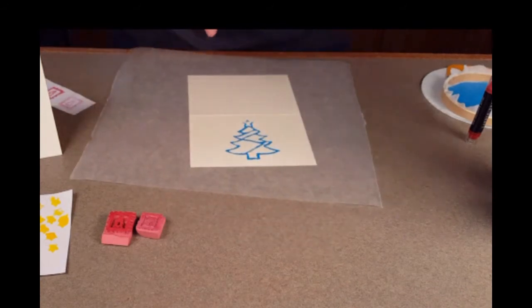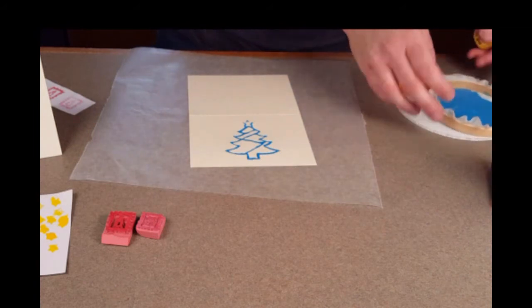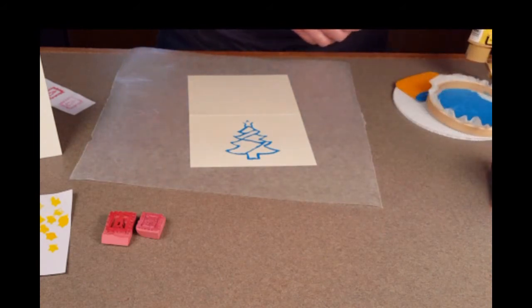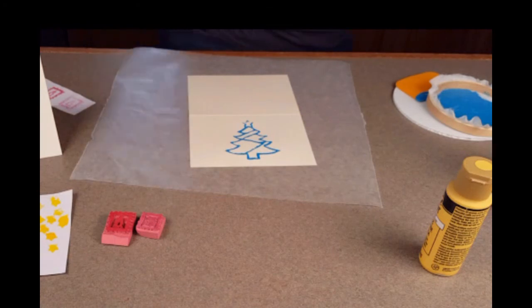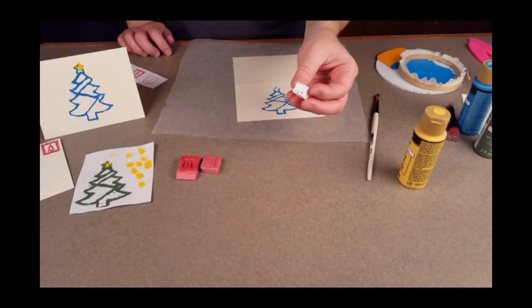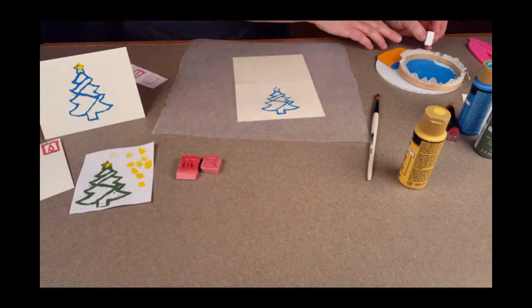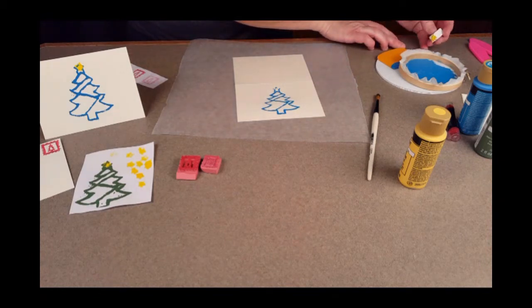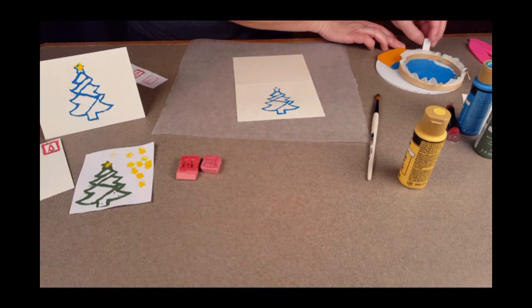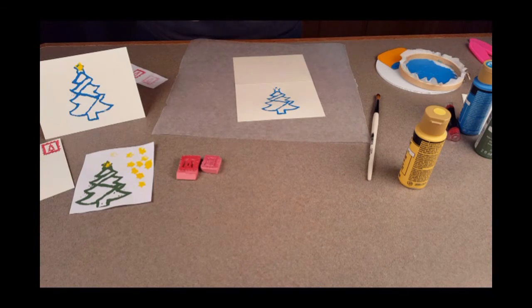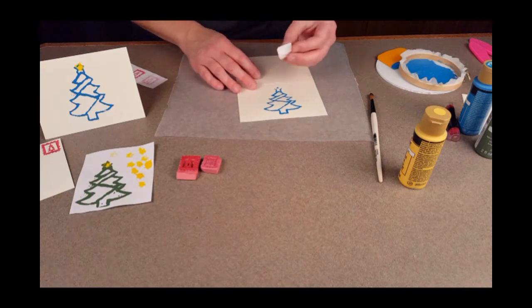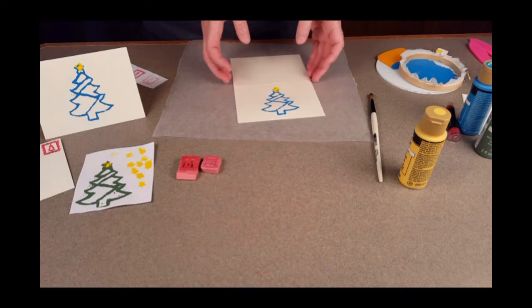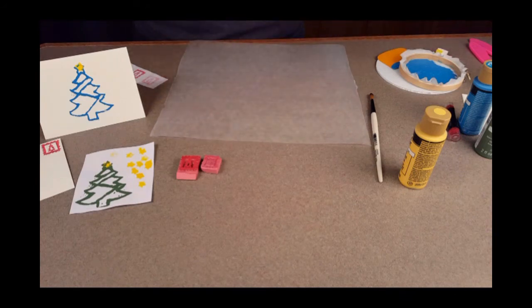Even while this is still wet, I'm going to put a little bit of yellow. I have a little abstract star stamp here and I'm going to get a little bit of yellow paint on that to cover it. I'm just going to stamp it into place and put an abstract star at the top of my tree.